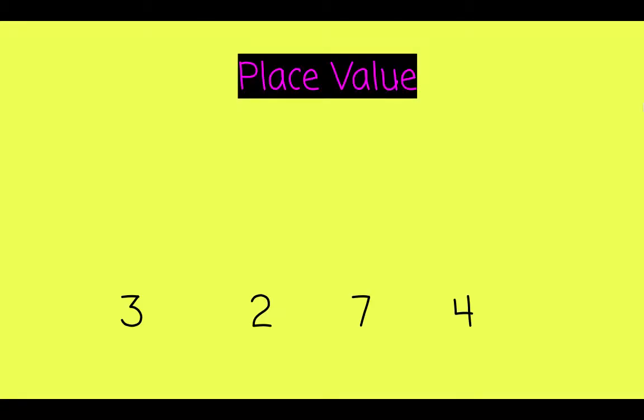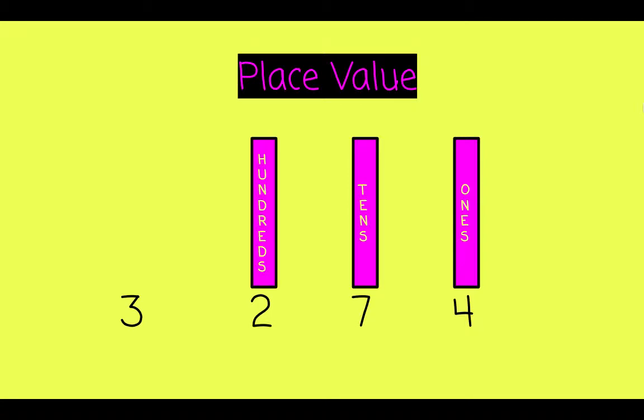3,274. This 4 is in the ones column. The ones column is always furthest to the right. Then we have the tens column and to the left of that, the hundreds column. To the left of the hundreds column is the thousands column. This 3 is in the thousands column, so it represents 3,000.